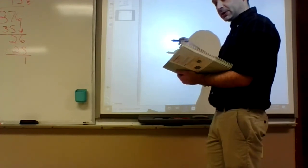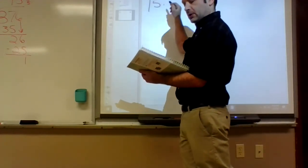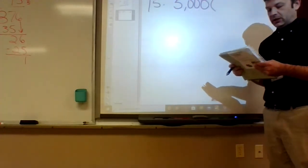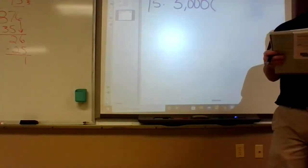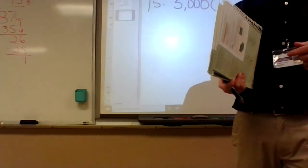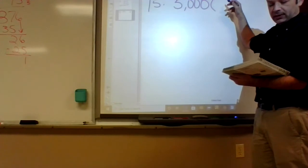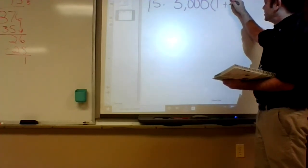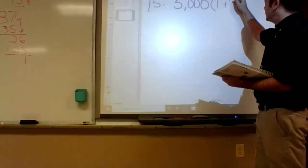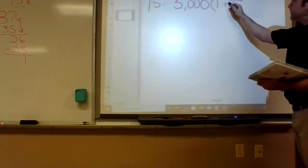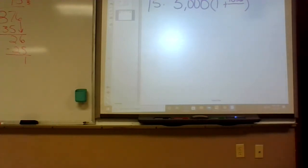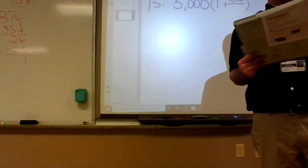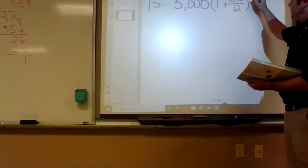Number 15: $5,000 at 3.6% APR — annual percentage rate. APR means the percentage you're getting per year. Convert 3.6% to 0.036. It's compounded monthly, so how many times are we getting paid? Twelve. So you put a 12 under the rate dividing it, and a 12 multiplying the exponent.